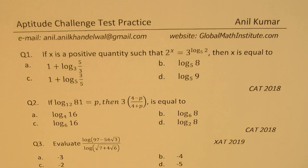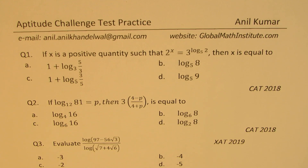Question number one: if x is a positive quantity such that 2 to the power of x equals 3 to the power of log to the base 5 of 2, then x is equal to which one of the following? Question number two: if log to the base 12 of 81 equals p, then 3 times (4 minus p) divided by (4 plus p) is equal to which one of the following?